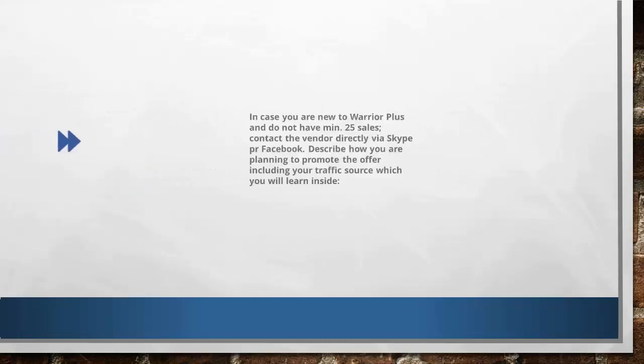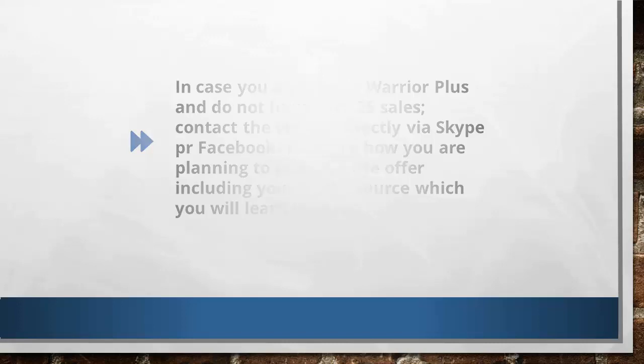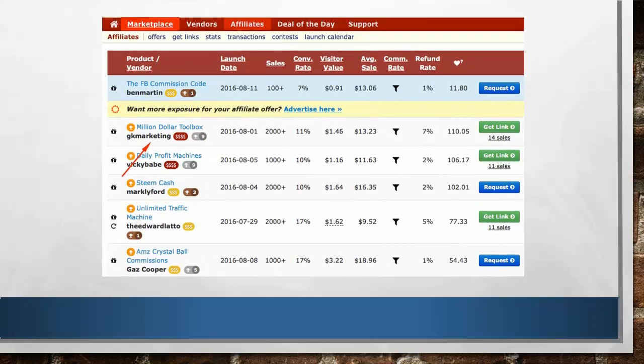First, let's go back to warriorplus.com. Click on Affiliates and then Offers on this page. You'll see the latest affiliate offers inside Warrior Plus. On the right side of the page, you can see the number of sales I've gotten for the products I've promoted. These notification signs are for new offers that just launched.